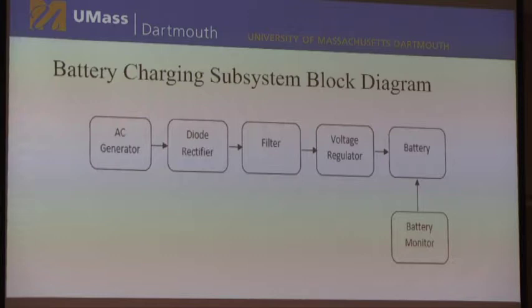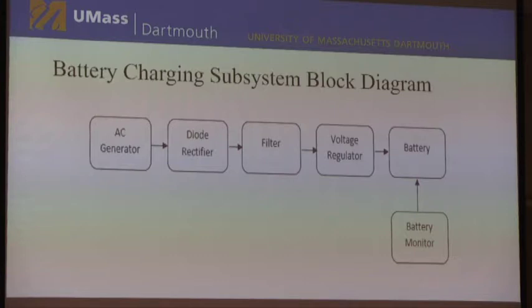Here we have an overview of our battery charging subsystem block diagram. Going from left to right, the input will be from our AC generator. From there, the AC voltage will go through our diode rectifier, the filter, and voltage regulator to convert to DC voltage. We will then use that DC voltage to charge the battery. During that process, we have a battery monitor with a green LED indicator showing the battery is full and a red LED indicator showing the battery is charging.